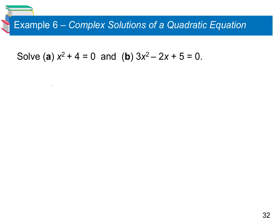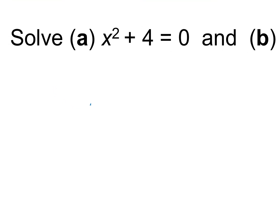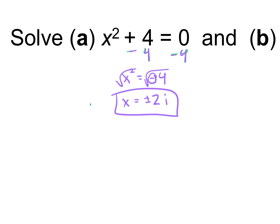Here we have our last two examples — we just have to solve. For the first equation, x squared plus 4 equals 0. Subtract 4 from both sides: x squared equals negative 4. Take the square root of both sides — remember the plus or minus. Since there's a negative under the radical, that comes out as i, and square root of 4 is 2. So x equals plus or minus 2i.